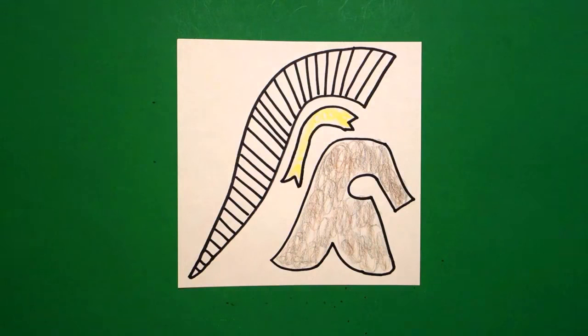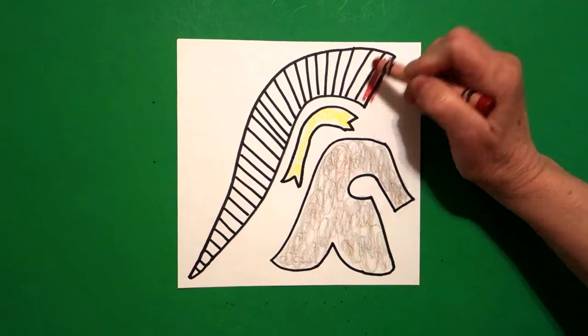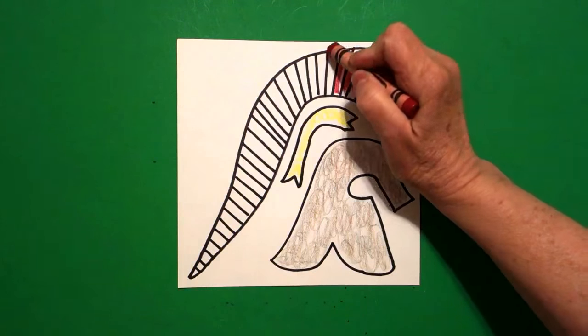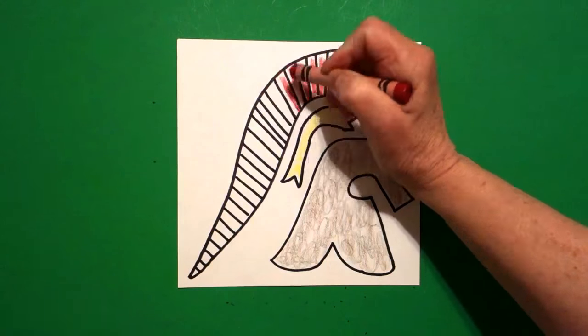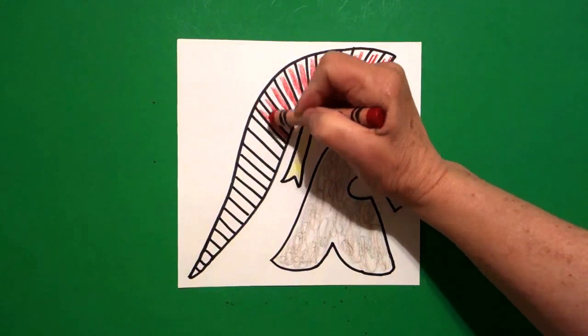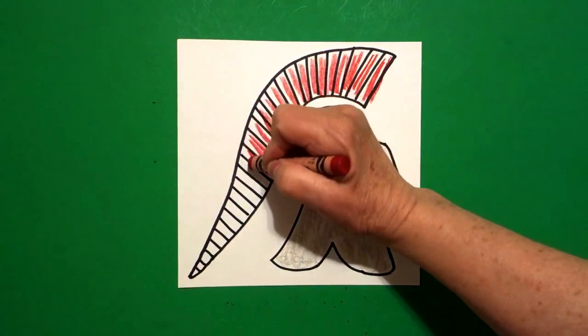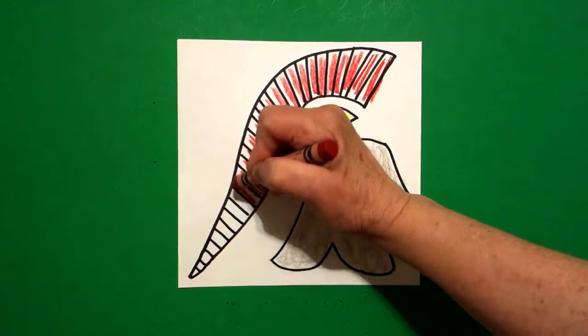And finally, I'm going to take my red and I'm going to color the crown part. And you just want to put straight red lines inside your space all the way down. Keep going. And this is that bristly crown part the helmets would have on top.